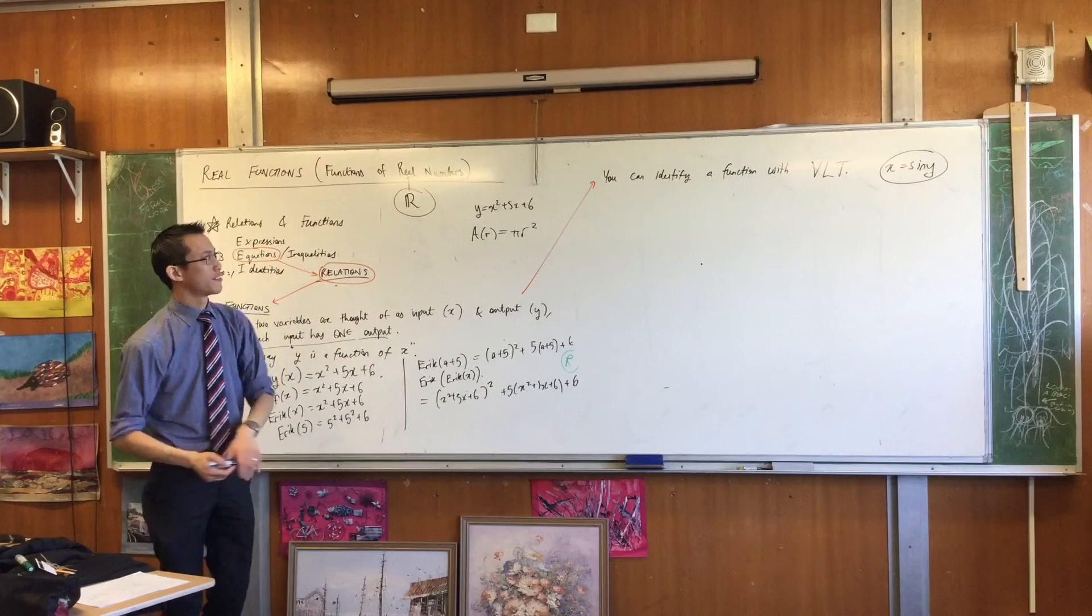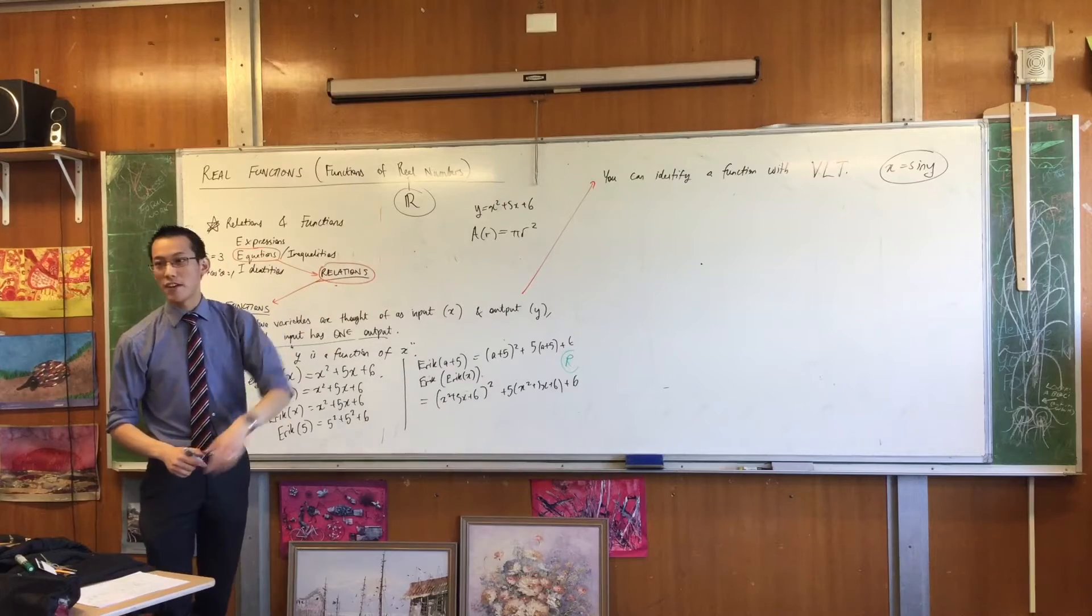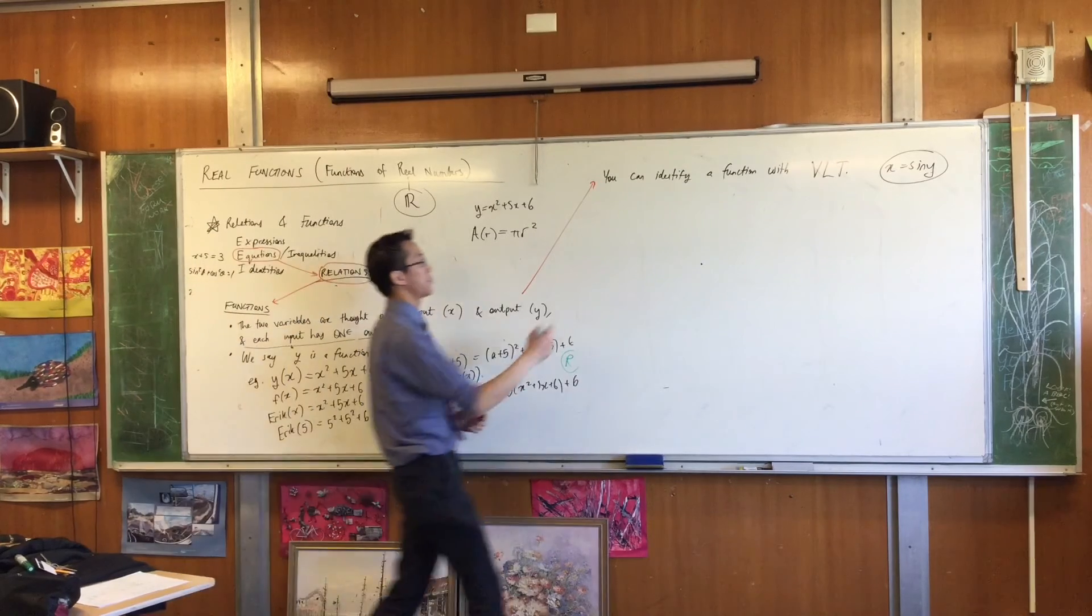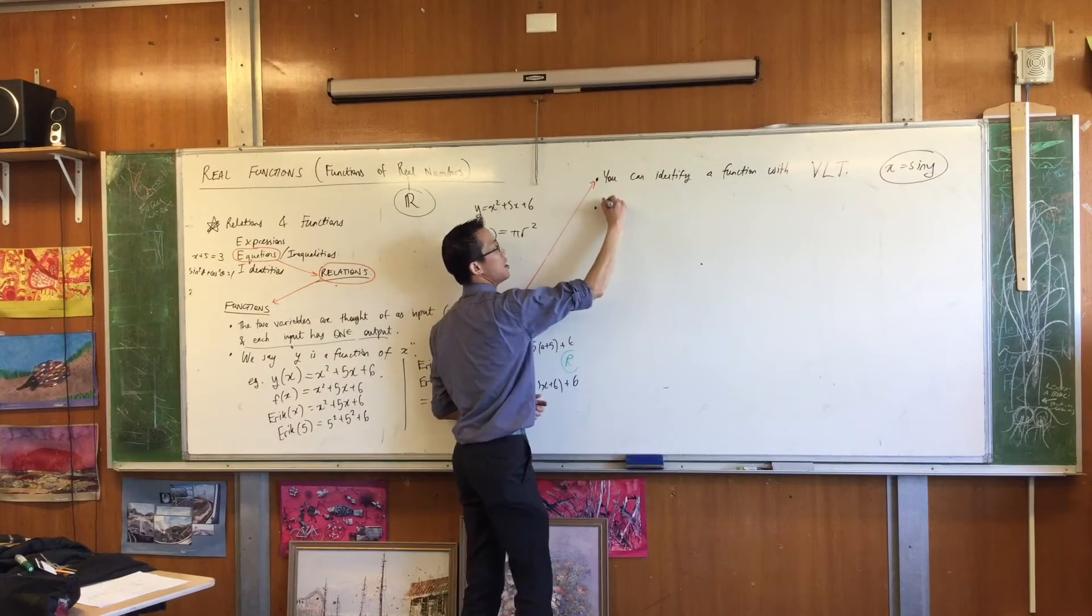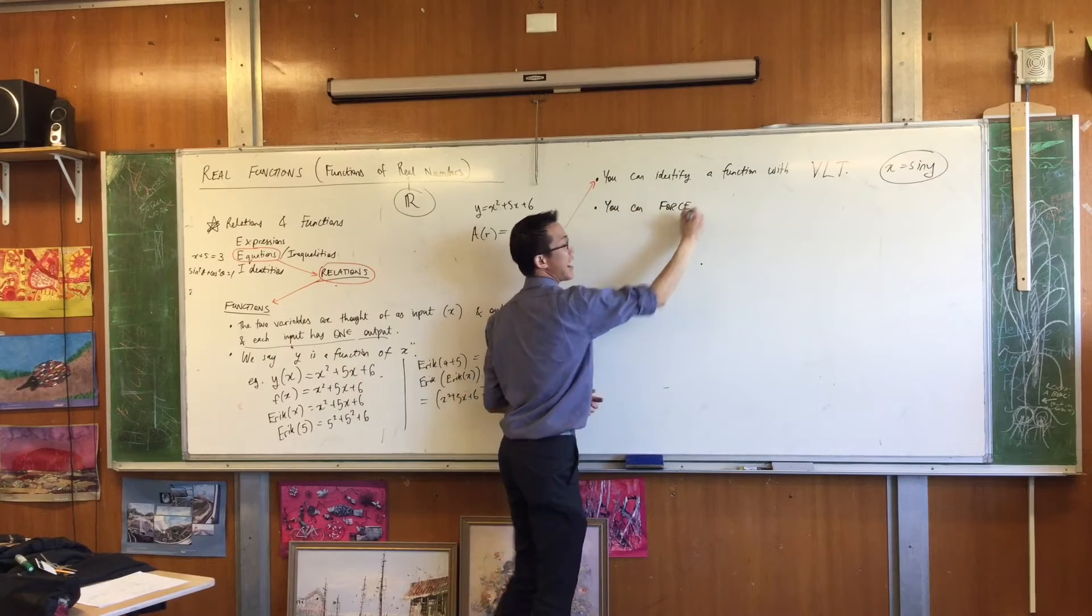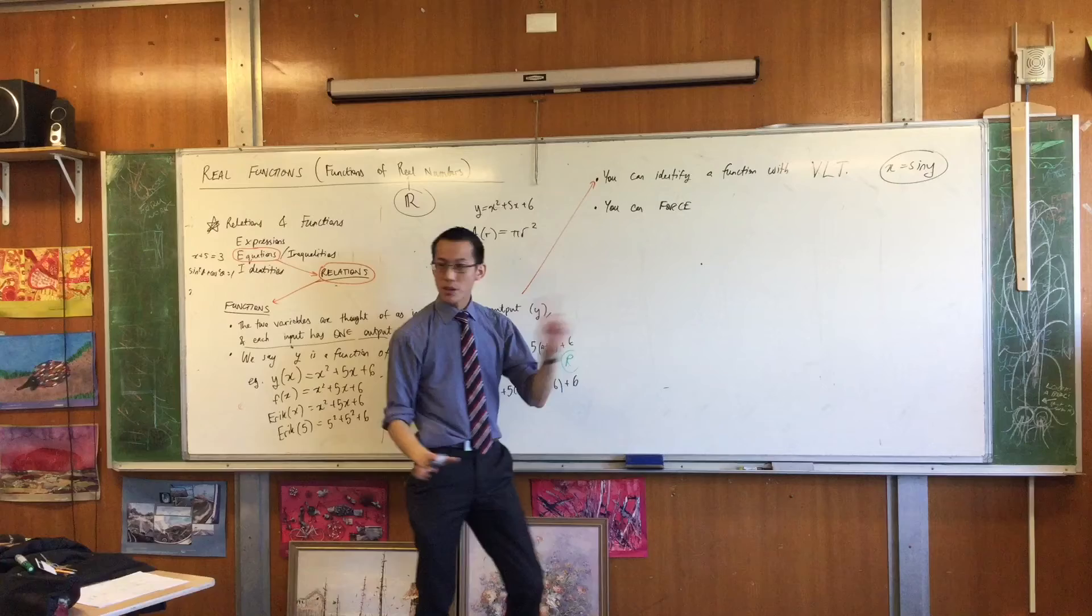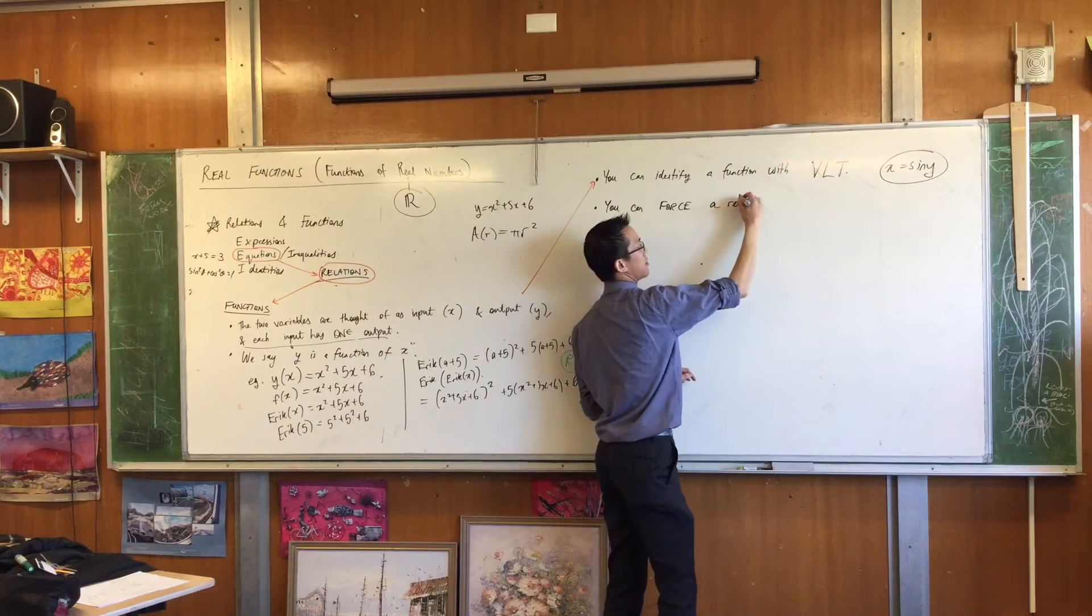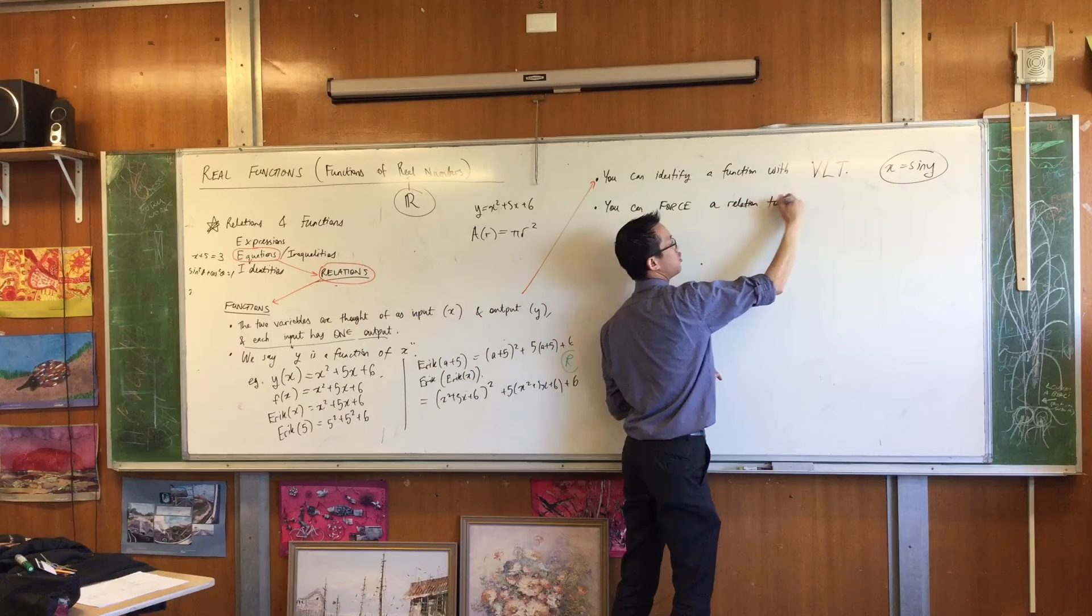Now, here's the thing, right? You can identify a function with a vertical line test. You can force any relation you like. You can force a relation to become a function.